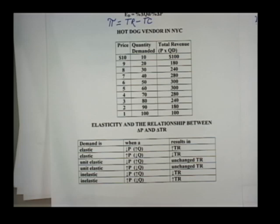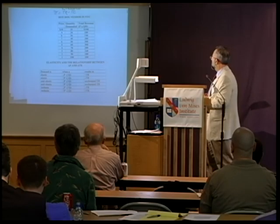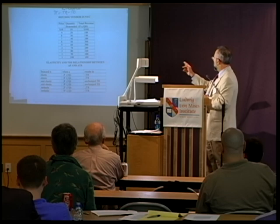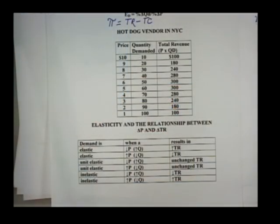I use this example for students at Pace University in New York City. There is a hot dog vendor right outside Pace who has to decide how much to charge for his hot dogs. Let's say he is currently charging $2 and selling 90 hot dogs per day. If you multiply $2 per hot dog by 90, his total revenue is $180.